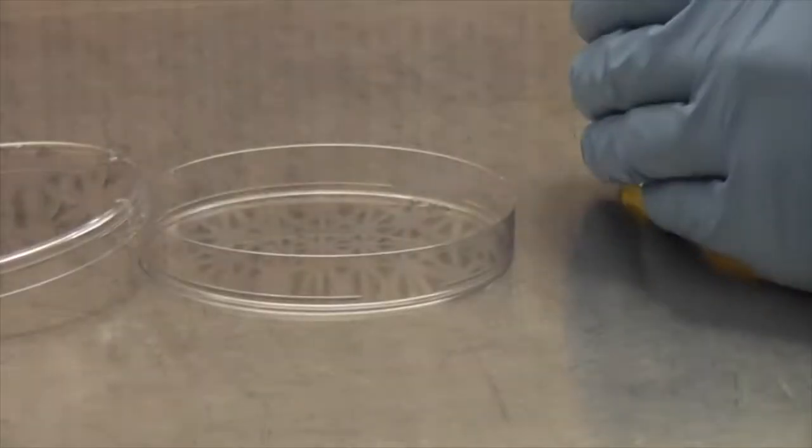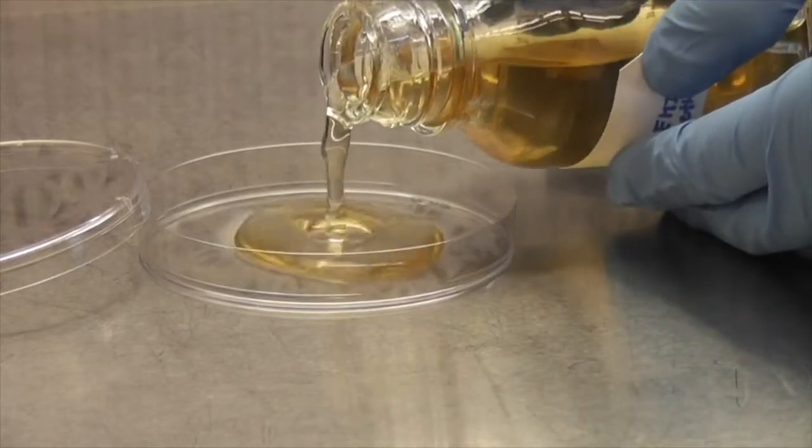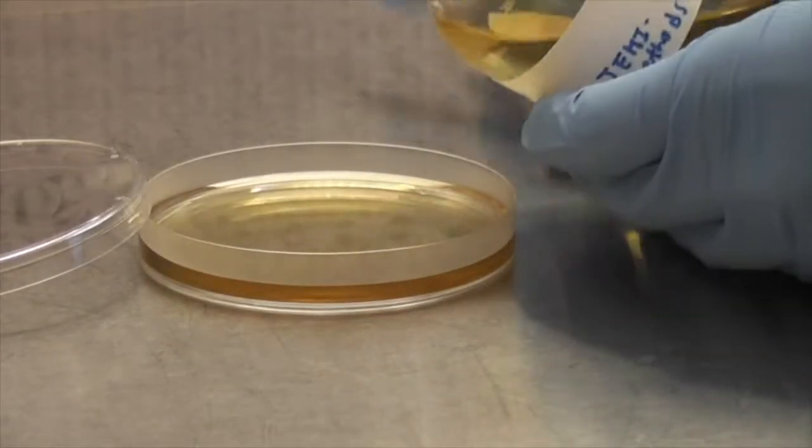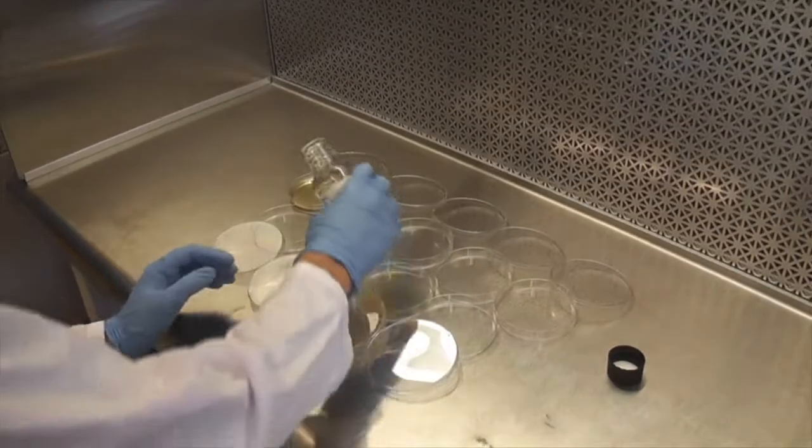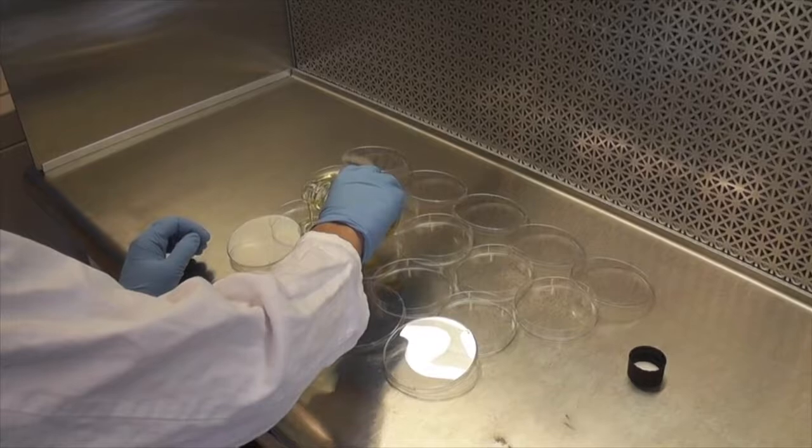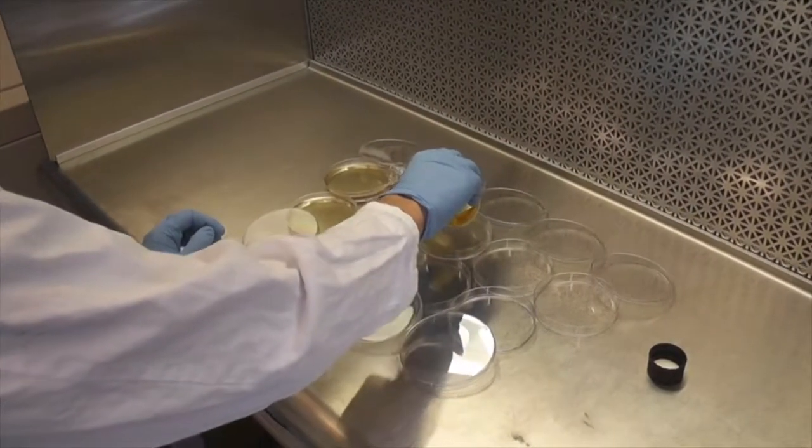Remove the lid from a sterile petri dish. Pour the agar in until it reaches halfway up the side of the petri dish. The volume per plate is roughly 25 milliliters. Continue pouring plates until all the agar has been used. Pour carefully to ensure that no bubbles appear in the agar.